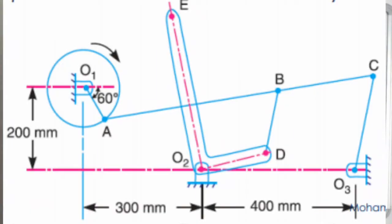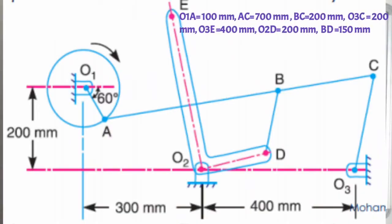We can plot point A with angle 60 degrees, and O1A distance is given as 100 millimeters. To plot point C, we take distance AC = 700 millimeters, so we take 14 centimeters in the compass and mark an arc with A as center. Then we take O3 as center with O3C = 200 millimeters (4 centimeters), mark another arc, and the point of intersection gives us point C.